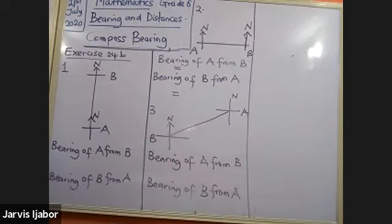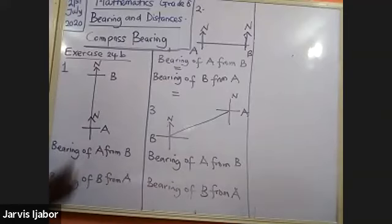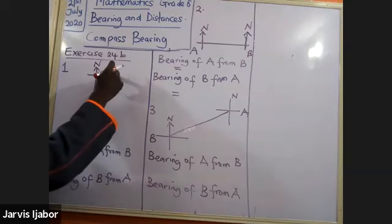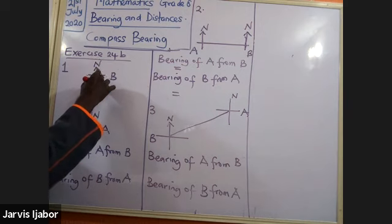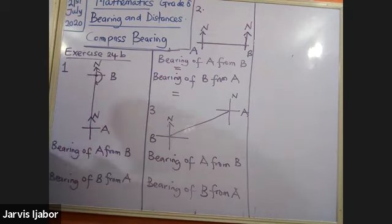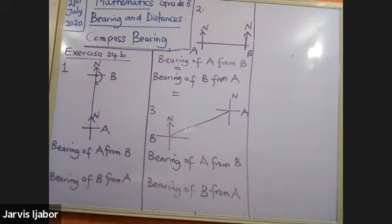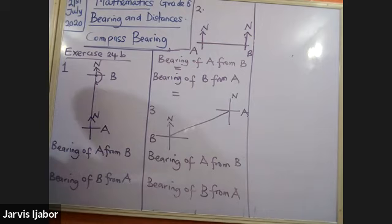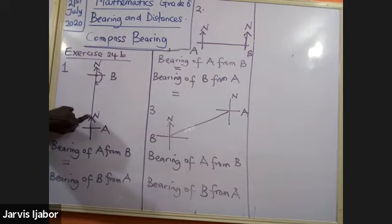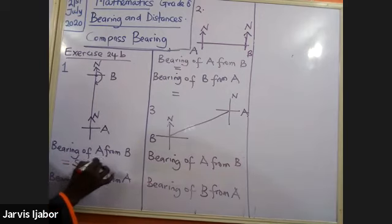Looking at question one — bearing of A from B: B becomes my reference point. I look at B and I see A is downward, which is south. So the bearing is simply south, or 180 degrees.